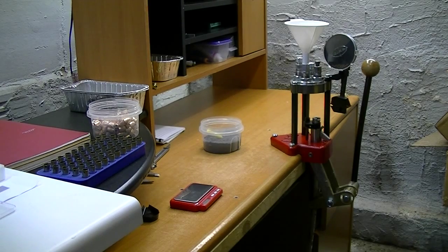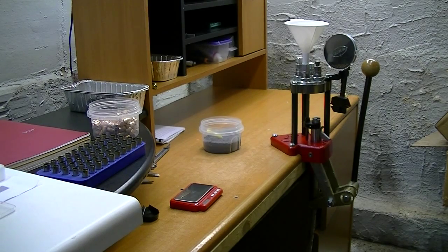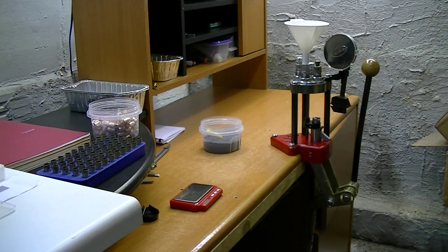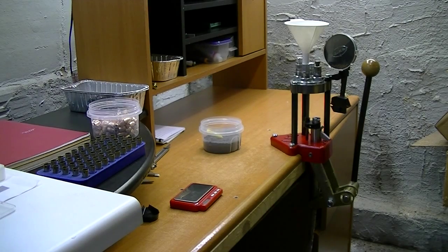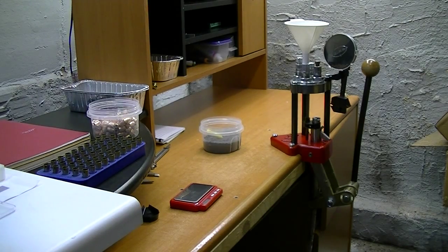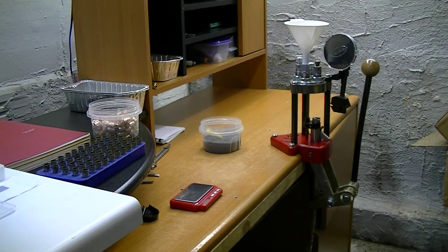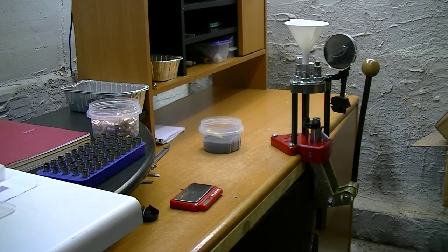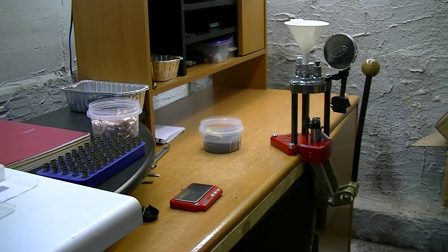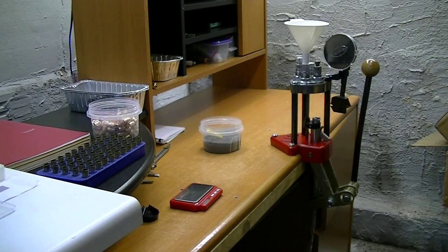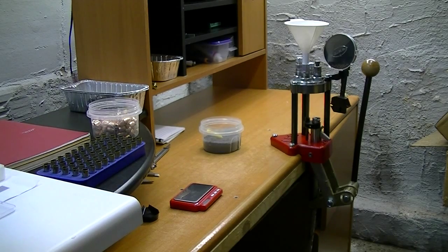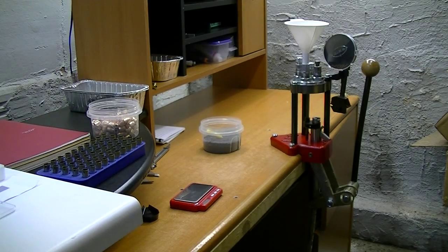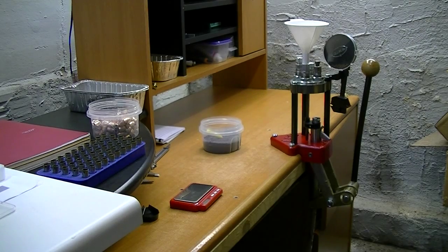So what I've decided to do, since I don't trust the Lee Pro Auto Disc at all, I end up weighing every single round that I load. So since I do that anyhow, I pretty much decided why not just use the Lee Dipper that comes with my Lee Die set and then trickle in what I need.